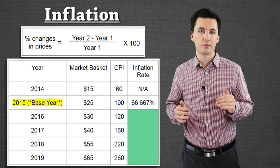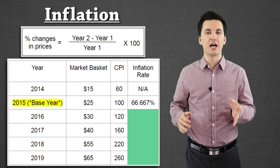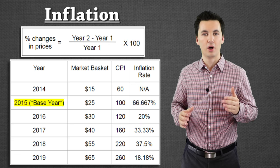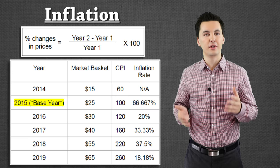Hopefully you were able to figure it out. You can see the answers here. This is showing us the inflation rate between our two years. It's important to remember that we're always going to take year two minus year one and divide by year one. The math is not that hard — it's just important to remember the formulas.